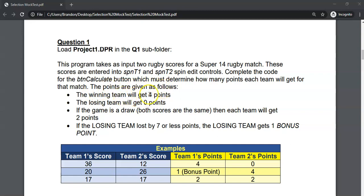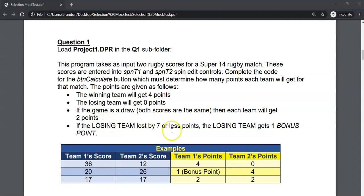The points are given as follows: the winning team gets four points, the losing team gets zero points, and if the game is a draw — both scores the same — they each get two points. There's also a tricky rule: if the losing team lost by seven or less points, the losing team gets one bonus point.